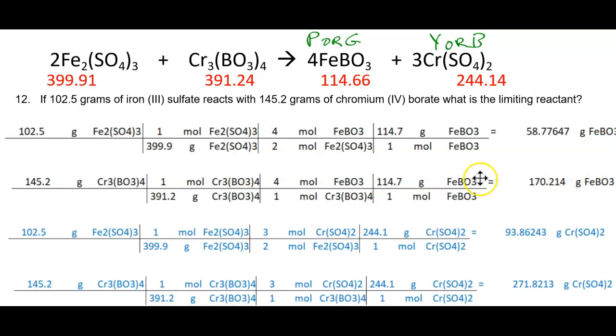This shows two options you'd have. You would not do both. You'd either do the set in black or the blue ink. You would take each reactant, 102.5 grams of iron sulfate and 145 grams of chromium borate, and take it to the same comparison point, the same product.